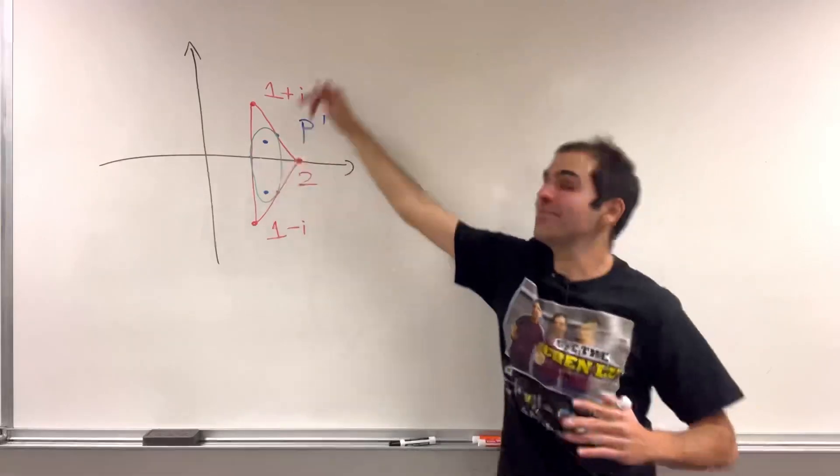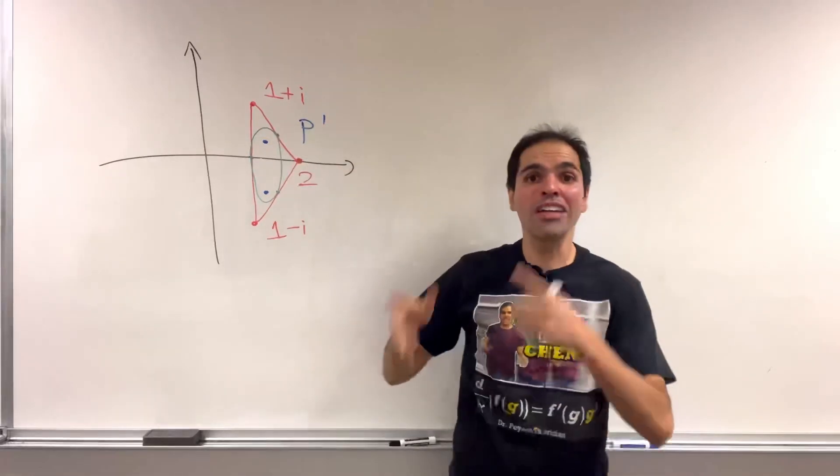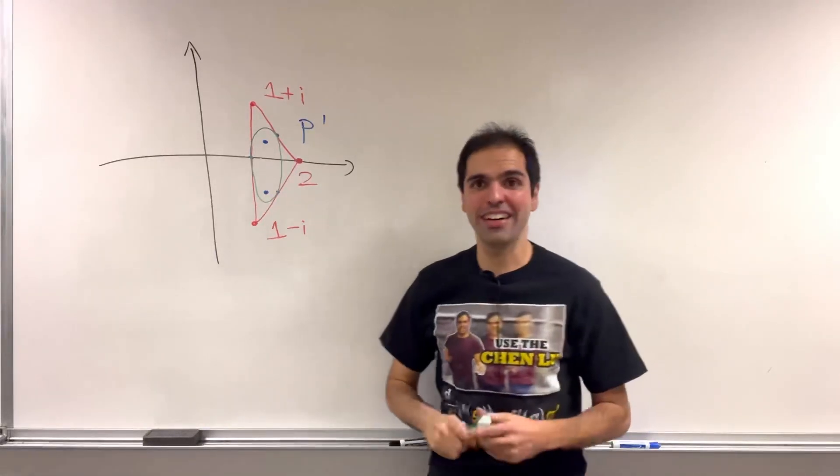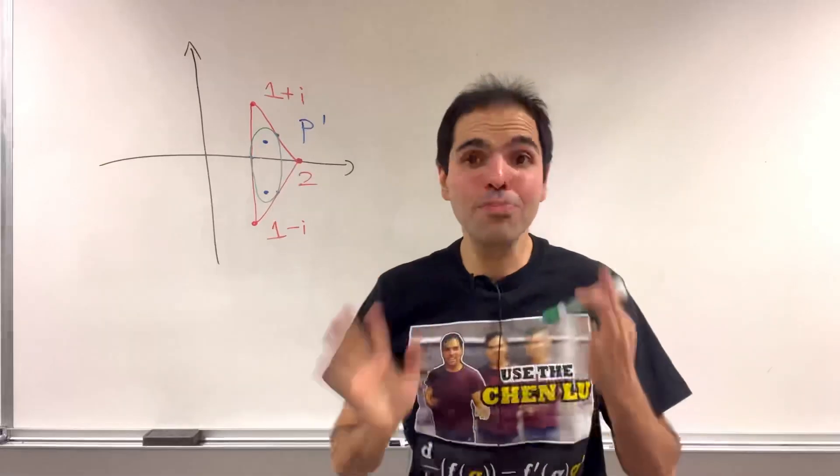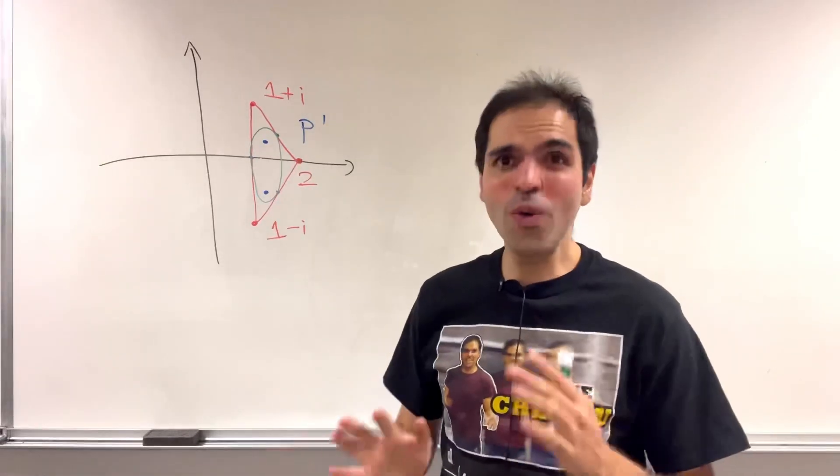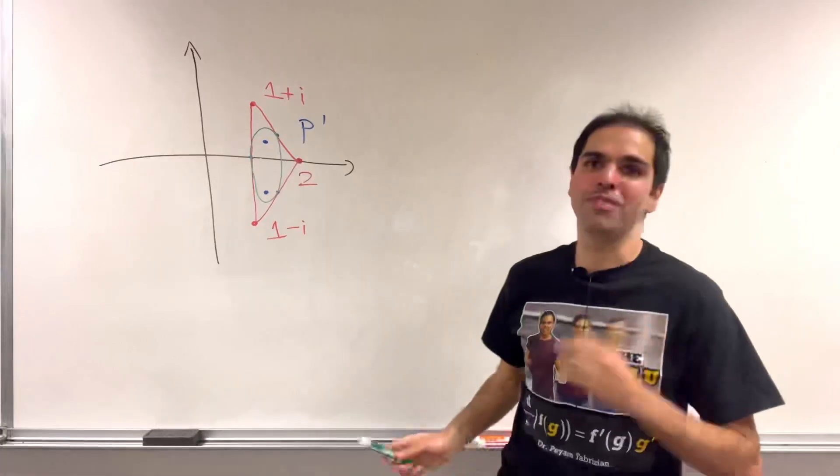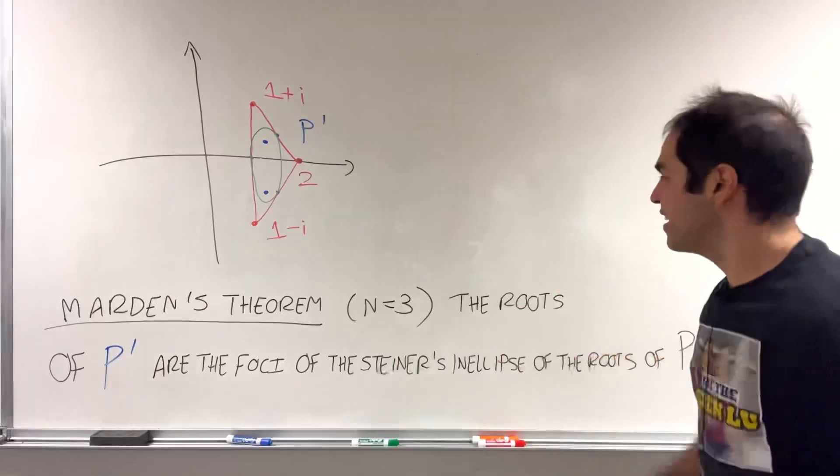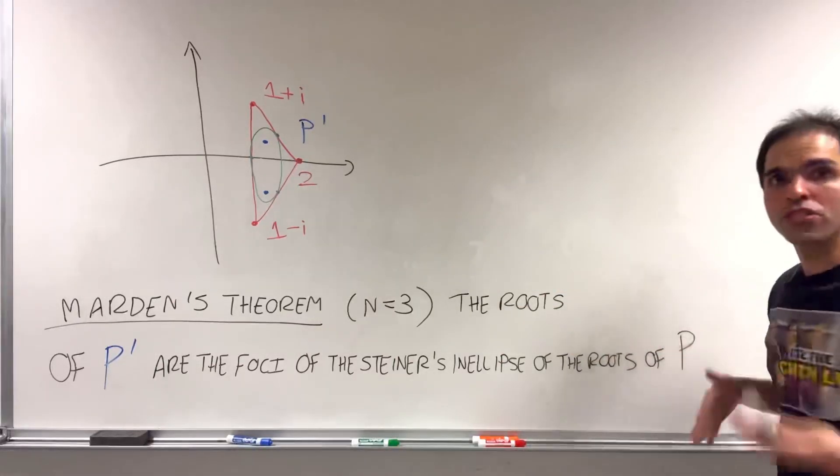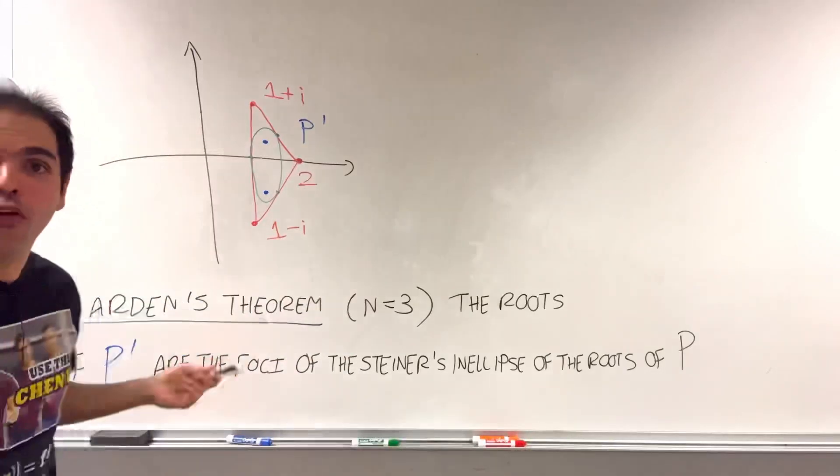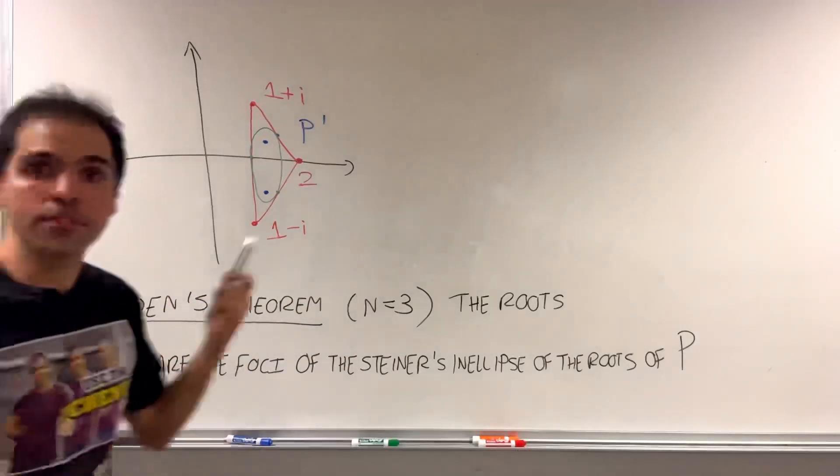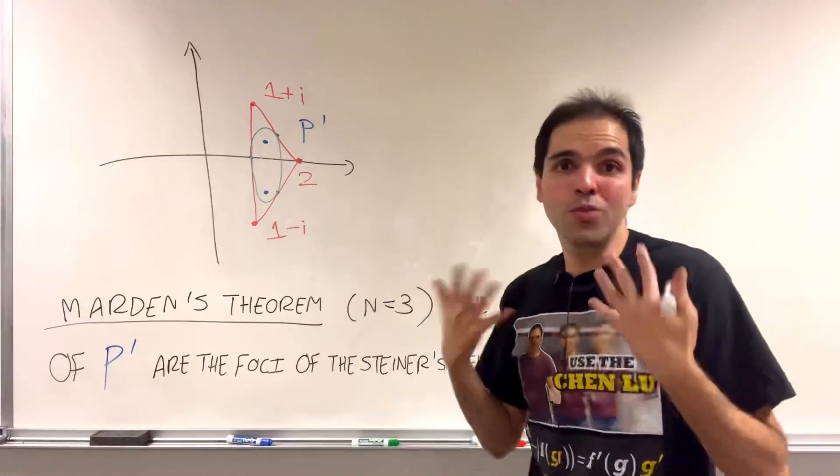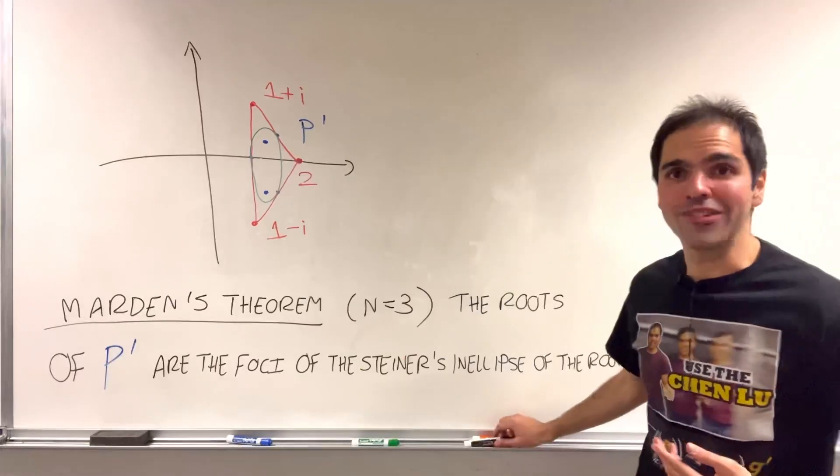The roots of the derivative of this polynomial are precisely the foci of that inellipse. In other words, to find the roots of P', just draw this ellipse that touches the point, and just find the foci. What a beautiful geometric description. Who knew that polynomials could be so neat? So there you have it, Marden's theorem indicates for n = 3, the roots of P' are the foci formed by the Steiner's inellipse of the roots of P, which completely solves the question, where are the roots of P', at least in the case n = 3.